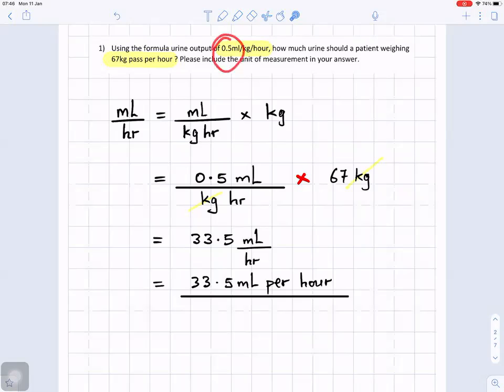All you do, you multiply 0.5 times 67, and that gives you 33.5. And then you write the units, milliliters per hour.